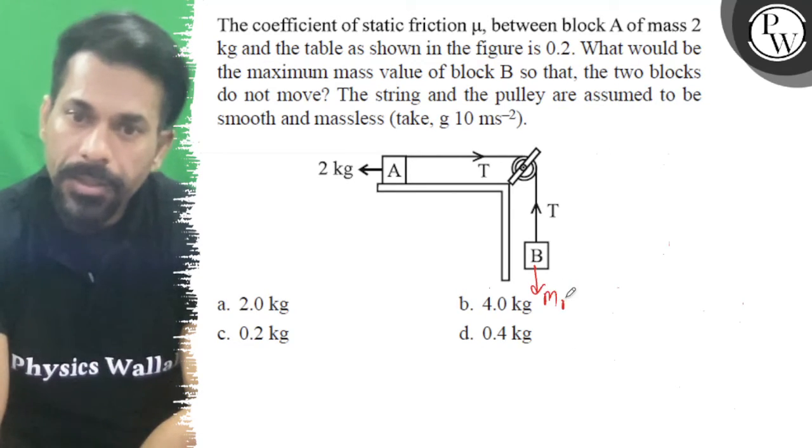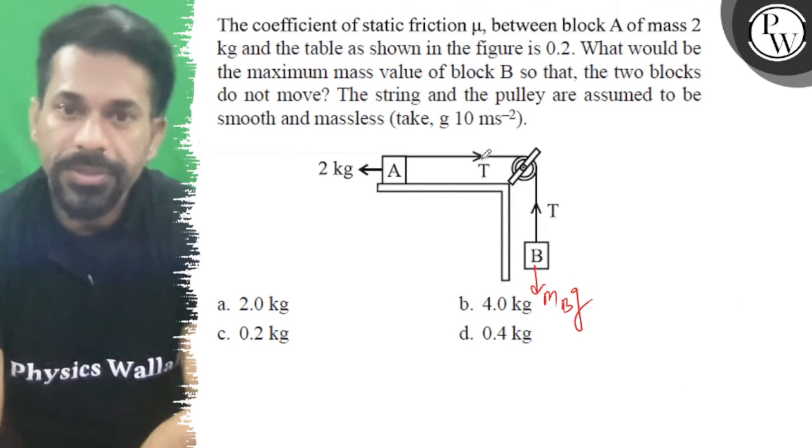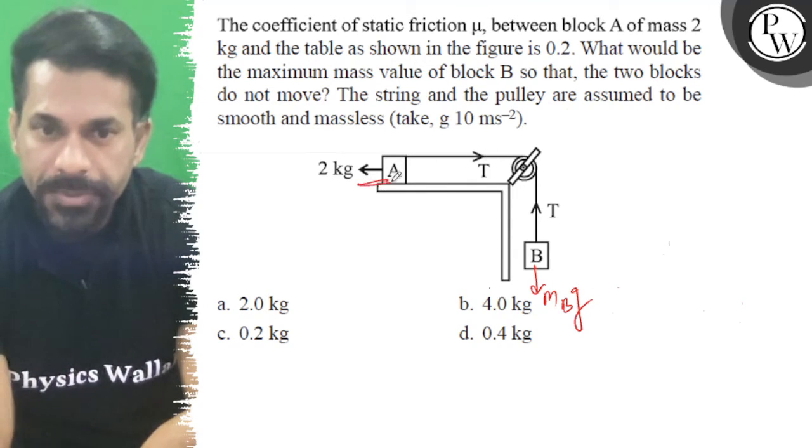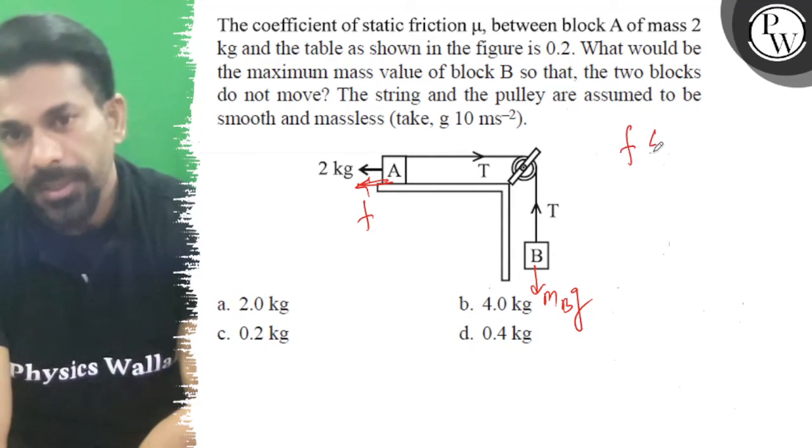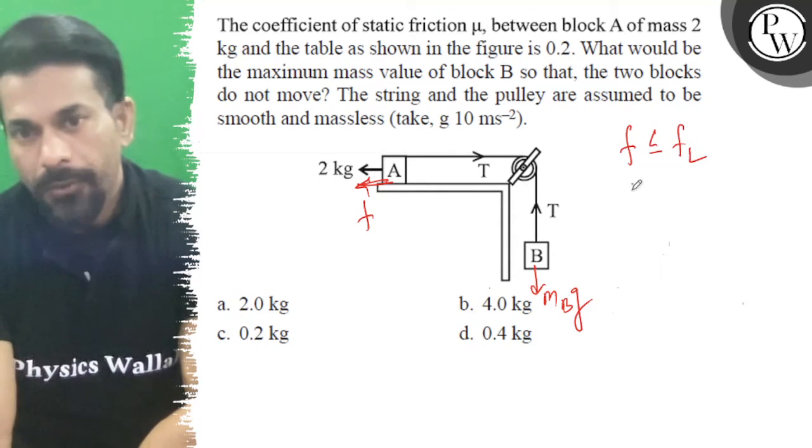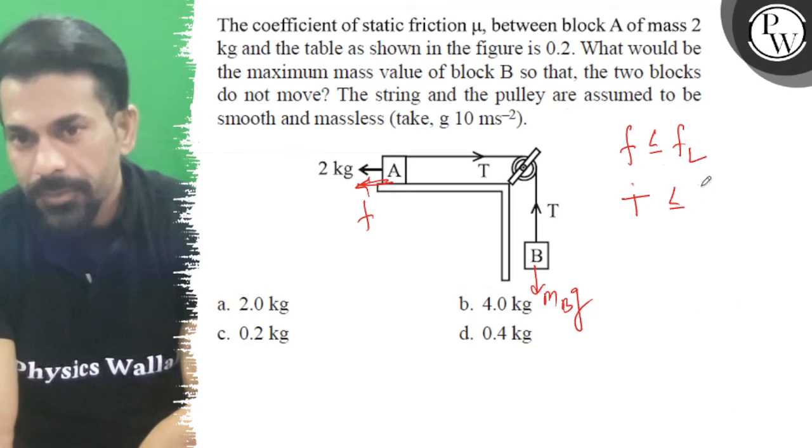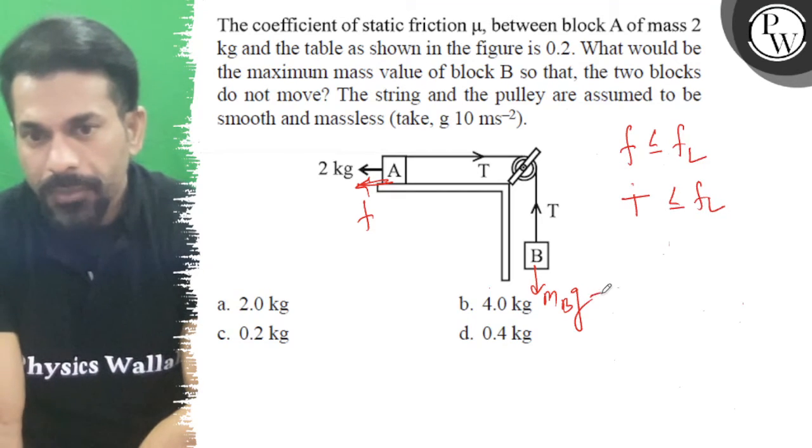So, let's draw MB*G and tension T. This friction will be backward. The friction will be less than or equal to limiting friction. The friction value T will be less than or equal to limiting, and T will be MB*G.